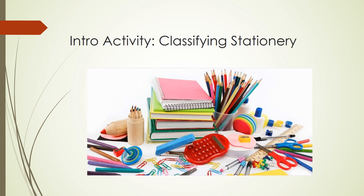Hopefully you've managed to sort some things into groups. Generally, what students do is sort things based on colour — so all the blue things together, all the red things together. Or you might sort them based on what they're used for: writing things like pencils, pens, and textures in one group; things for correcting mistakes like white-out and erasers in another; and things like calculators, compasses, and rulers as maths accessories.